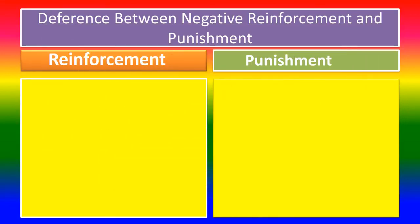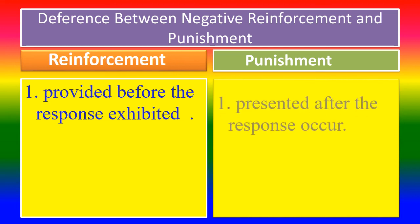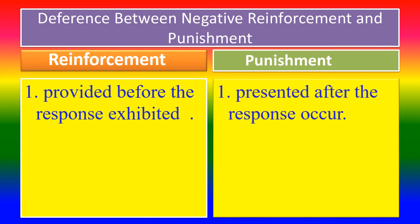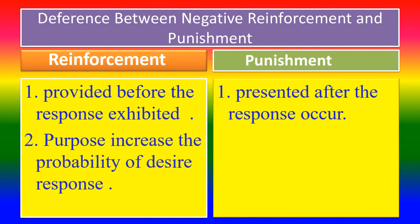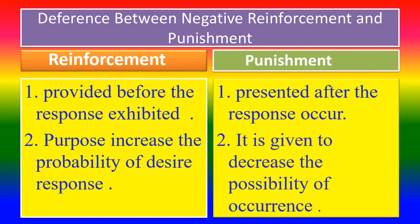Difference between negative reinforcement and punishment: Reinforcement means it is provided before the response is exhibited, whereas punishment is presented after the response has occurred. The purpose of reinforcement is to increase the probability of a desired response, while punishment is given to decrease the possibility of occurrence of that response.